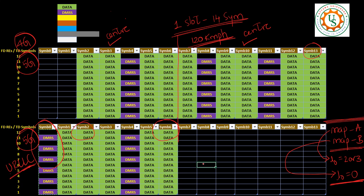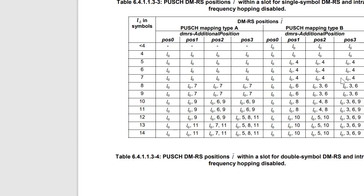We can configure very few symbols — even just 2 symbols — in which one symbol will be DMRS, for low data rate applications or devices. Looking back at the specification, you can see that in the first row, less than four symbols — for mapping type B there is a possibility for allocation, even just two symbols where one is DMRS. But in mapping type A, since it does not address IoT devices, less than four symbols there is no allocation.